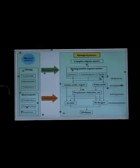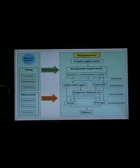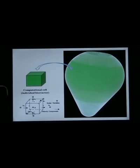The integrated model includes physical processes and biological processes. In the physical process, it covers mixing and heat transfer. In the biological process, it covers hydrolysis, acidogenesis, acetogenesis, and methanogenesis. In the CFD simulation, each computational cell represents an individual bioreactor. Mixing and heat transfer are solved simultaneously at each cell.